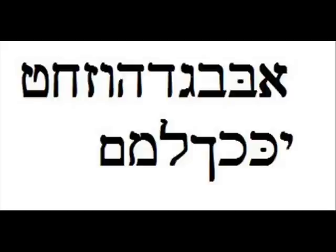Here's a review of the letters we've learned so far: Aleph, Bet, Vet, Gimel, Dalet, He, Vav, Zion, Chet, Tet, Yud, Kaf, Chaf, Chaf Sofit, Lamed, Mem, Mem Sofit.